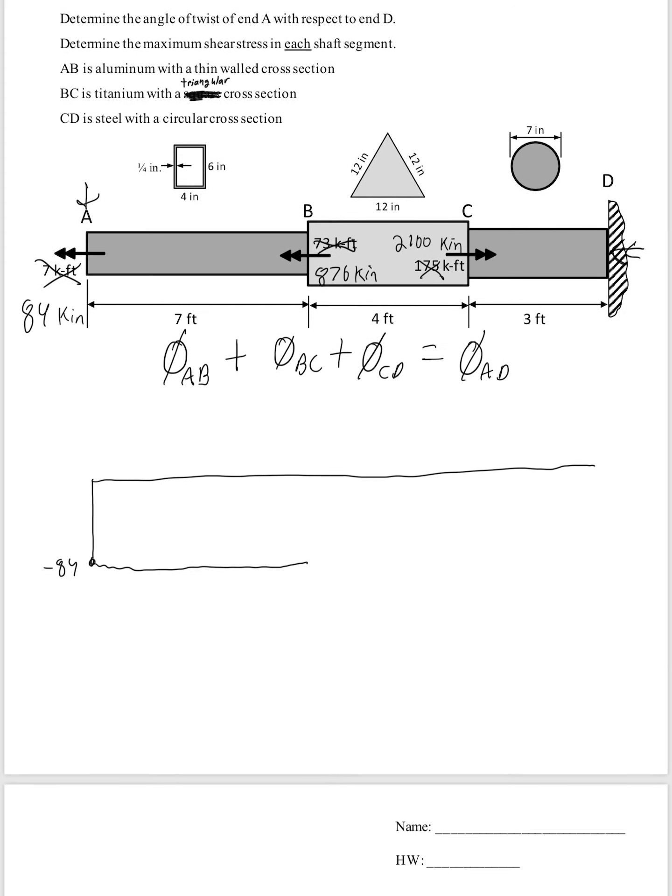And nothing happens until we hit here. And we're going to go a negative 84 minus 876. Puts us at a negative 960. Keep going over. Now that's going to the right, so it's a positive 2100. Which puts us up at 1140. And at the wall, we know we have to finish at 0. Back to 0.